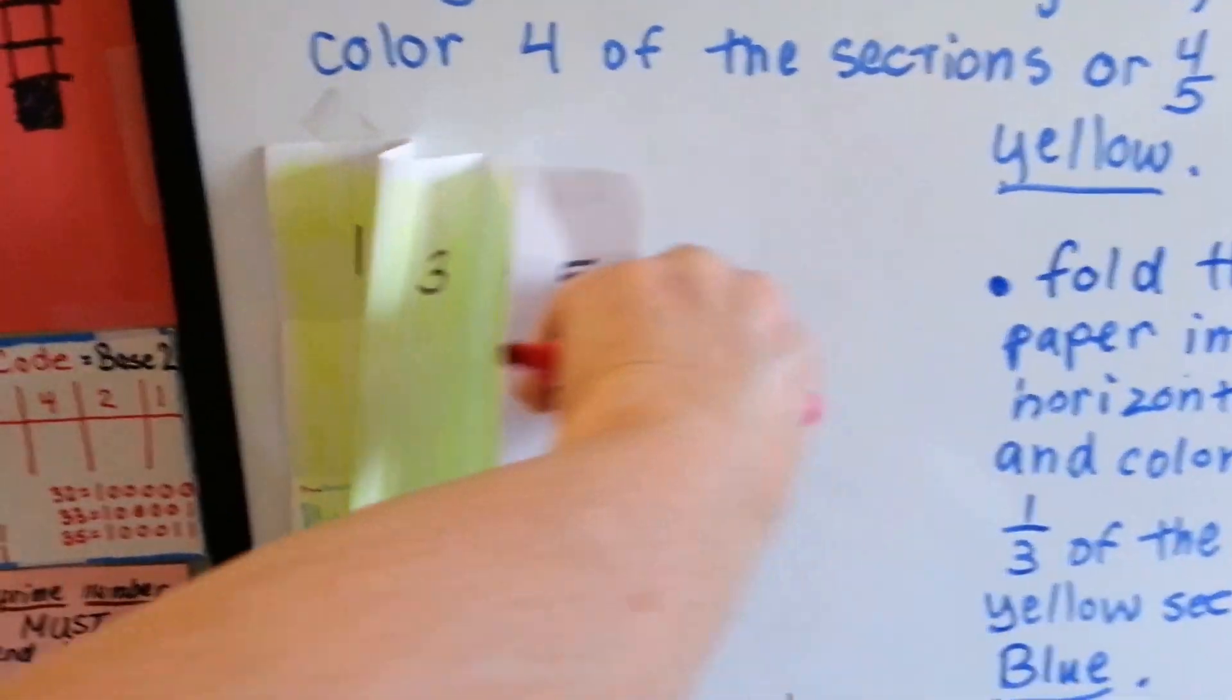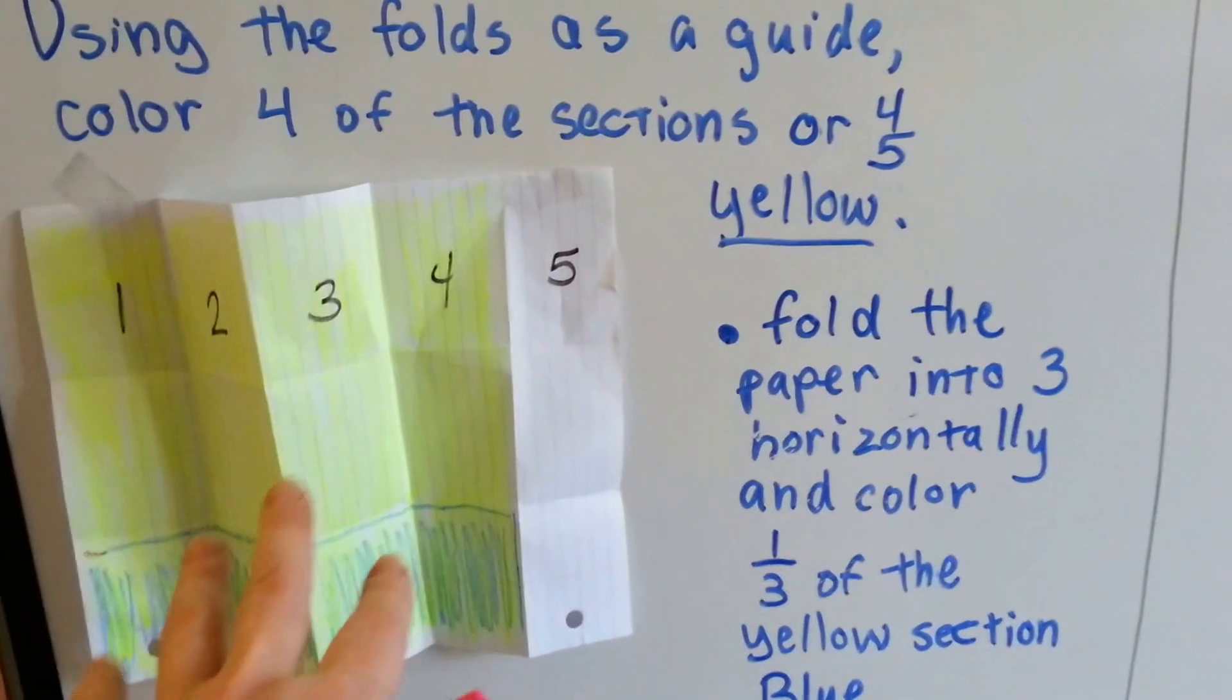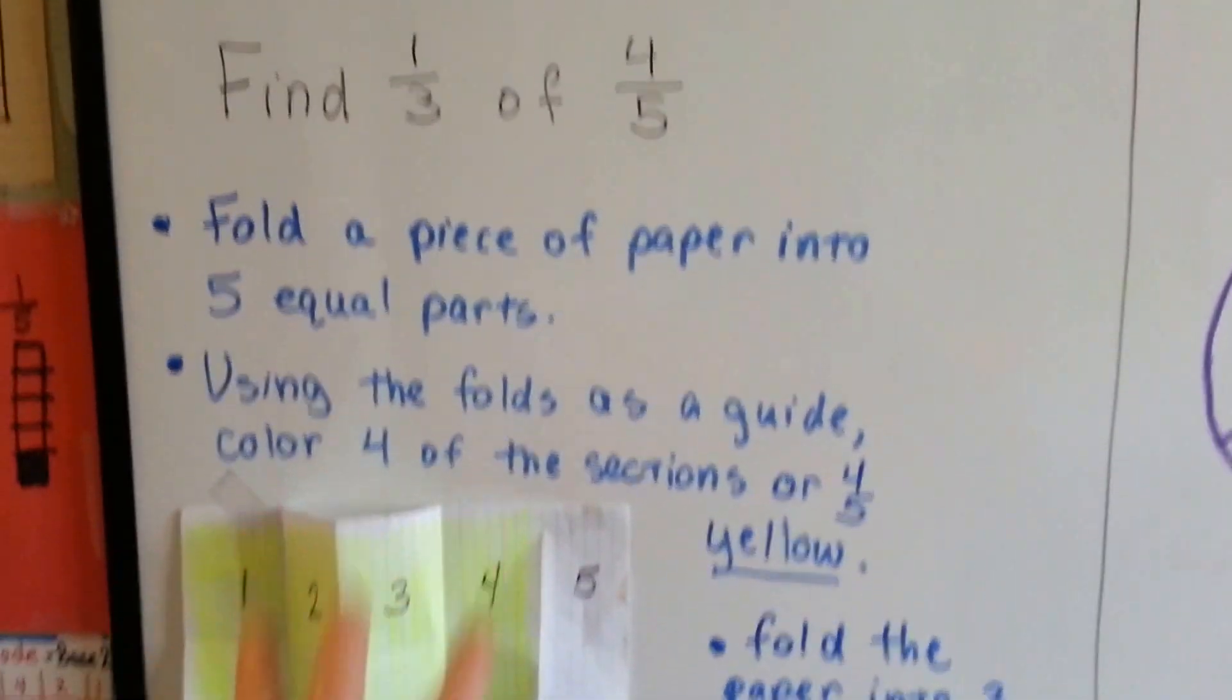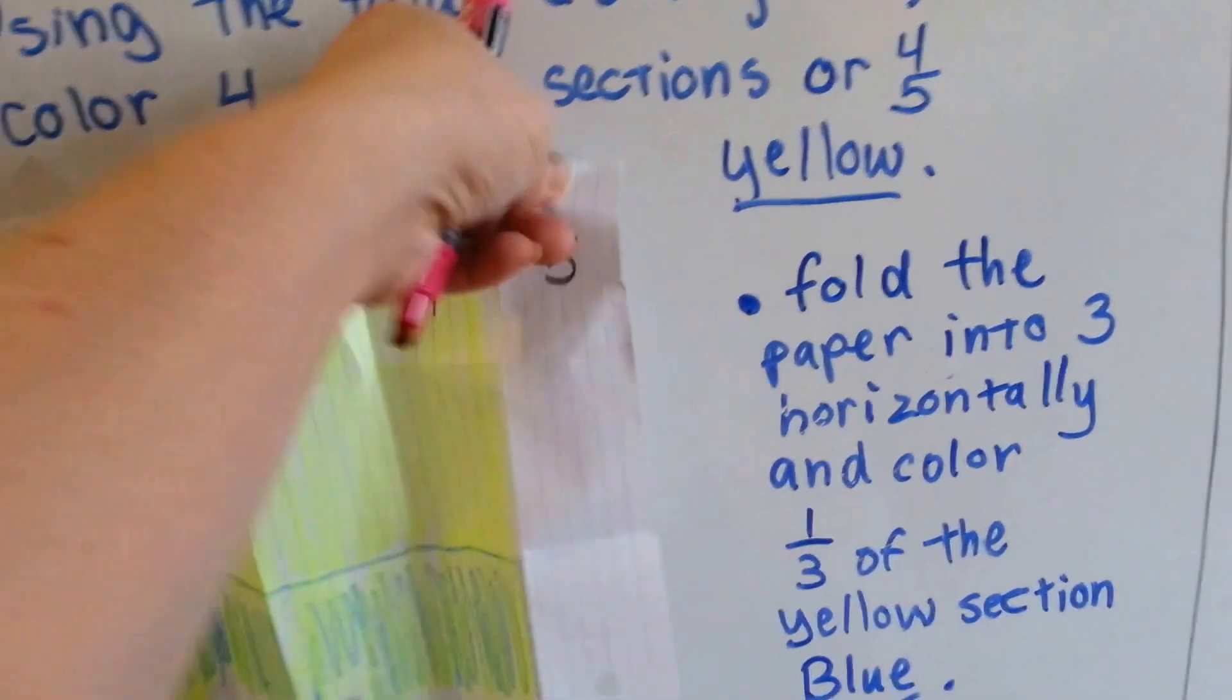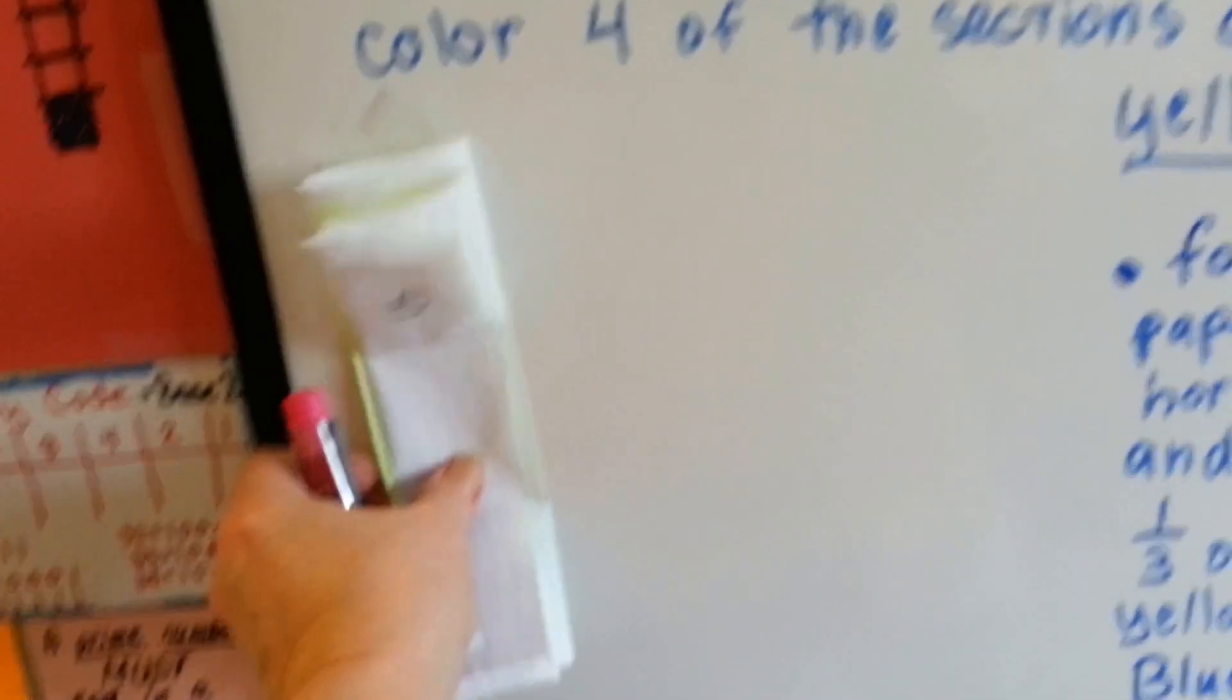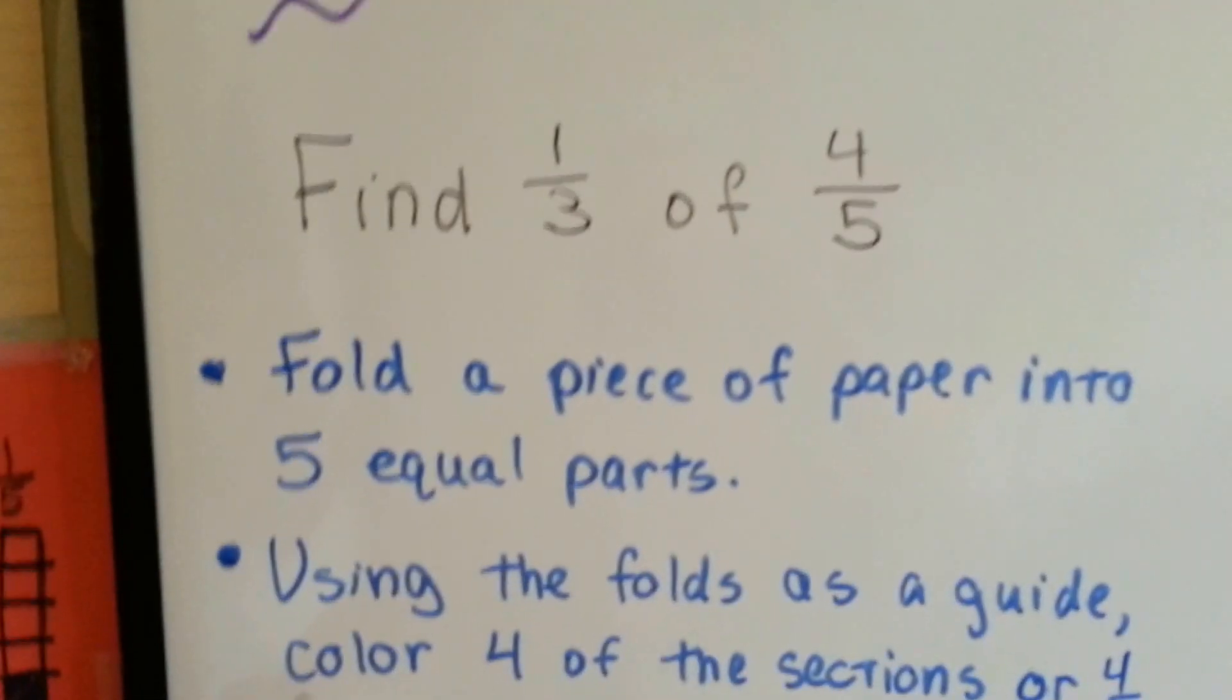I've got them numbered 1, 2, 3, 4, 5, and it was long like this. Then what I did was, I colored in 4 of those 5 long parts. That's 4 fifths. Then what I did was, once they were colored in, I folded it like this again, and I folded it into 3 parts: 1, 2, 3.